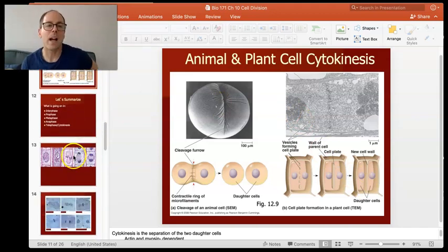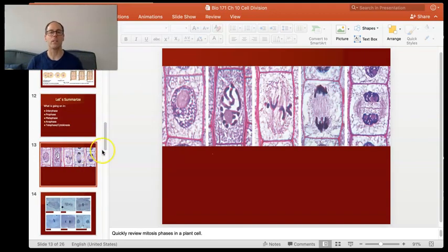So let's look at some actual cells undergoing these steps. These are plant cells. So you can see here, here's a cell in interphase. You can see the nucleus. The chromatin is kind of loose. This is the nucleolus part of the nucleus, and that's still around.